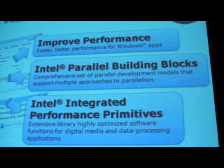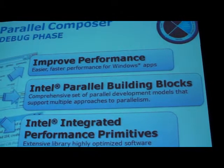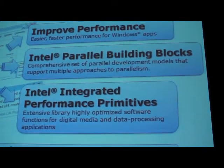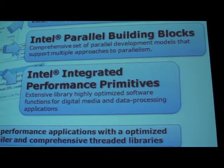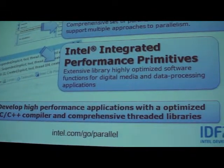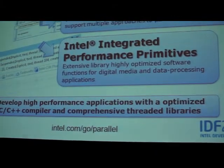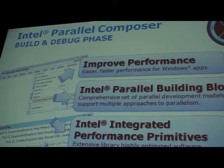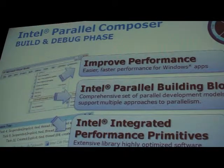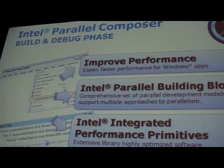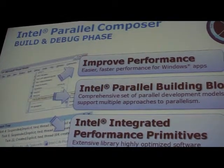Also in Parallel Studio is our compiler and libraries — Intel Parallel Composer. This is the highest performance compiler available for C and C++, with lots of exciting optimization features including capabilities for parallelism. It also comes with Integrated Performance Primitives, a library covering a lot of common multimedia operations with very high performance.